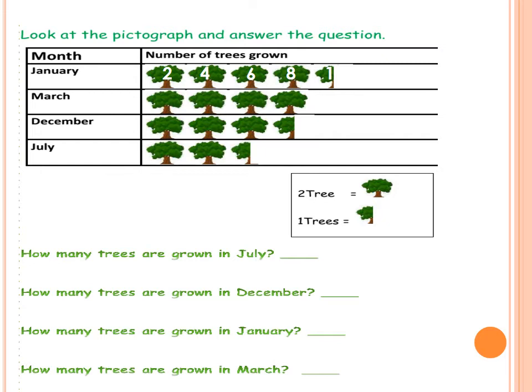Let's answer the first question here. How many trees are grown in July? Look for July in the table. Here is July, the last one. We have 4 plus 1 equals 5. So, we have 5 trees.